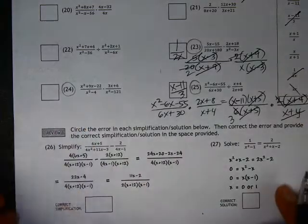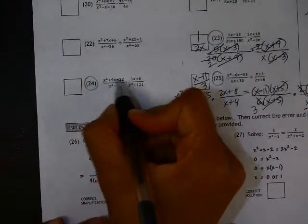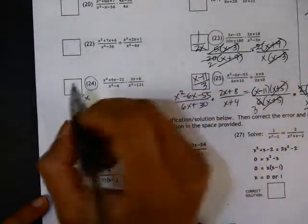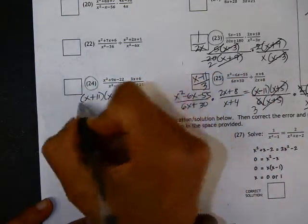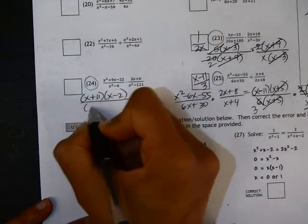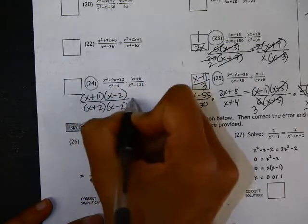Then on number 24, again multiplying rational expressions. Here we have a trinomial. X squared plus 9x minus 22 is x plus 11 times x minus 2. X squared minus 4 is a difference of squares, so x plus 2 and x minus 2.